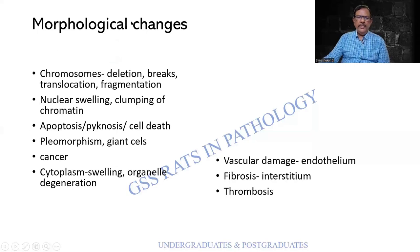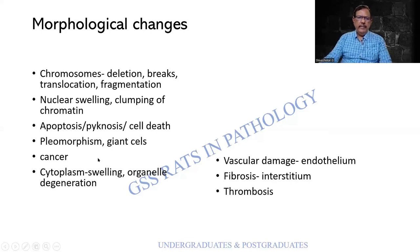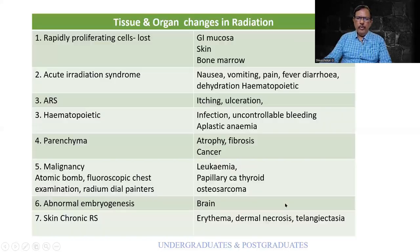The morphological changes include chromosomal alterations — deletions, breaks, translocation, and fragmentation — as well as swelling and clumping of chromatin, pleomorphism, and giant cell formation. There can be organelle degeneration. In blood vessels, there can be damage to the endothelium, fibrosis of the interstitium, and thrombosis.